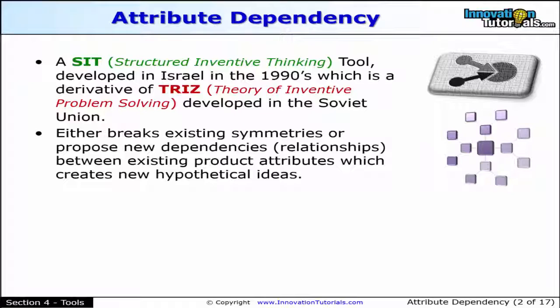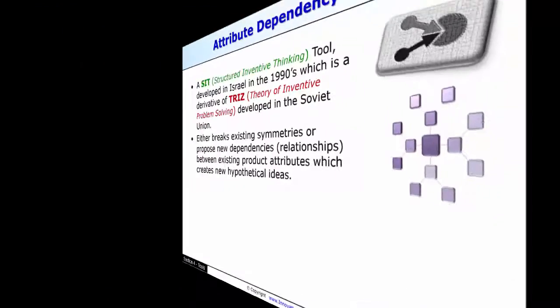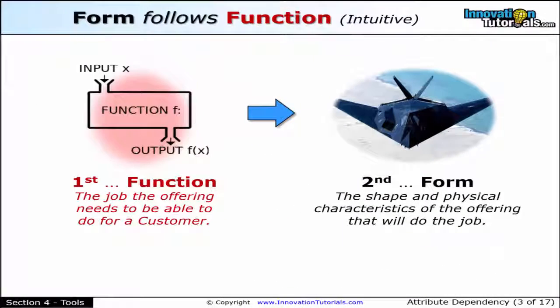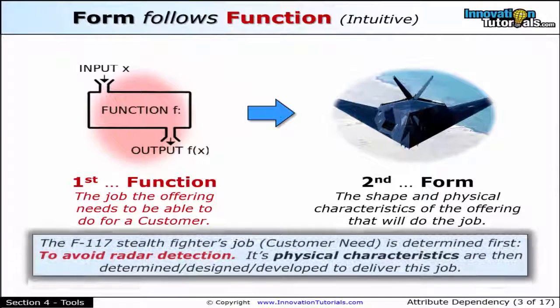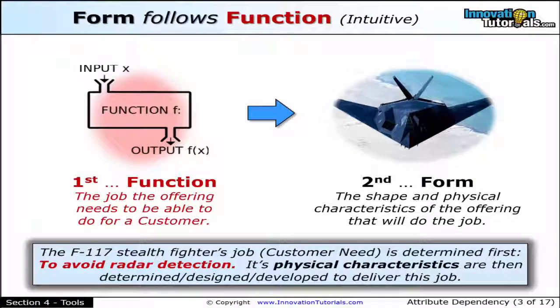What attribute dependency does is one of two things: it either breaks existing symmetries in the existing product or service, or it proposes new dependencies or relationships between existing product attributes. That's what form follows function means. For example, you can look at the F-117 stealth fighter. In its job, the customer's need was determined first, and one of the big jobs was to avoid radar detection.